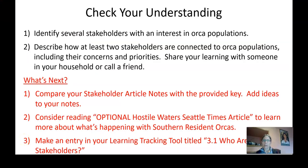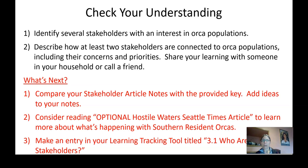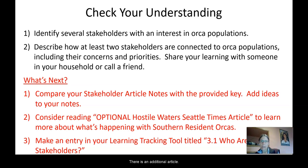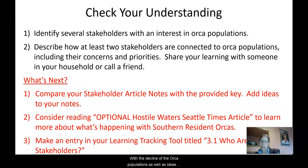To wrap things up, the main idea now is to read some articles and figure out who the stakeholders are. It would be good if you could contact somebody else, either in your household or a friend, and describe some of the things that you've learned, because doing that will help you understand it better. Add your ideas to your note sheet. There is an additional article called Hostile Waters that appeared in the Seattle Times, which has a very good overview of all the issues relating to the decline of orca populations, as well as ideas about how to solve the issue.